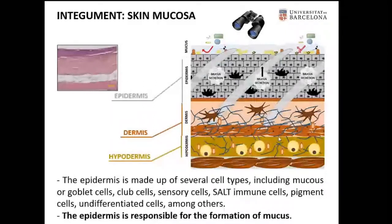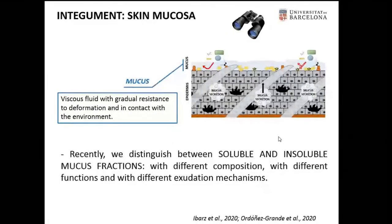Focusing on the skin mucosa, it is structured in different layers, including the hypodermis, the dermis, and the epidermis. The epidermis is made of several cell types, including mucous cells, goblet cells, and club cells, as well as sensory cells, skin-associated lymphoid tissue cells, pigmentary cells, and other cells. The epidermis is responsible for the formation of the mucus, which is a viscoelastic fluid in contact with the surrounding water. We distinguish between soluble and insoluble mucus fractions, which have different compositions, different functions, and different exudation mechanisms.